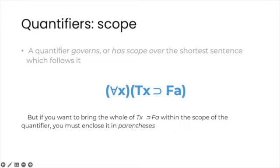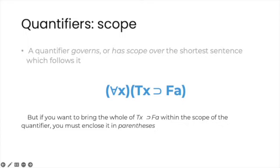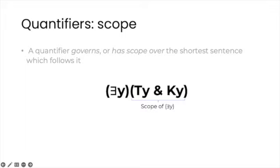However, there is a simple way to bring the whole of if tx, then fa within the scope of the quantifier, just by enclosing it in parentheses. Of course, exactly the same notion of scope applies to the existential quantifier. In this case, just for variety's sake, I'm using y as a variable, and you can see that thanks to the parentheses, the conjunction ty and ky is within the scope of the quantifier.